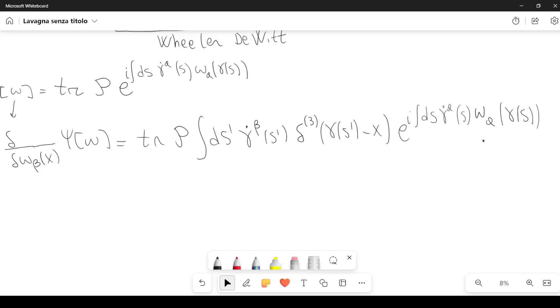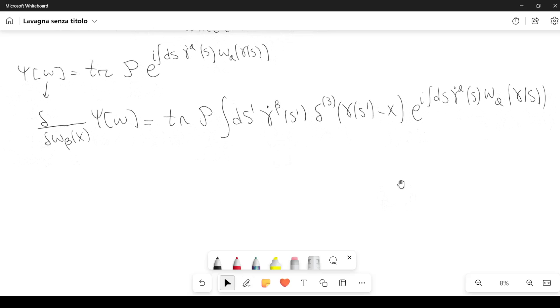Then we have e to the i integral ds gamma dot a of s omega a of gamma of s. Now this is a very complicated expression, but what I wanted to show you is that this functional derivative here is proportional to gamma dot beta, as you can see here.